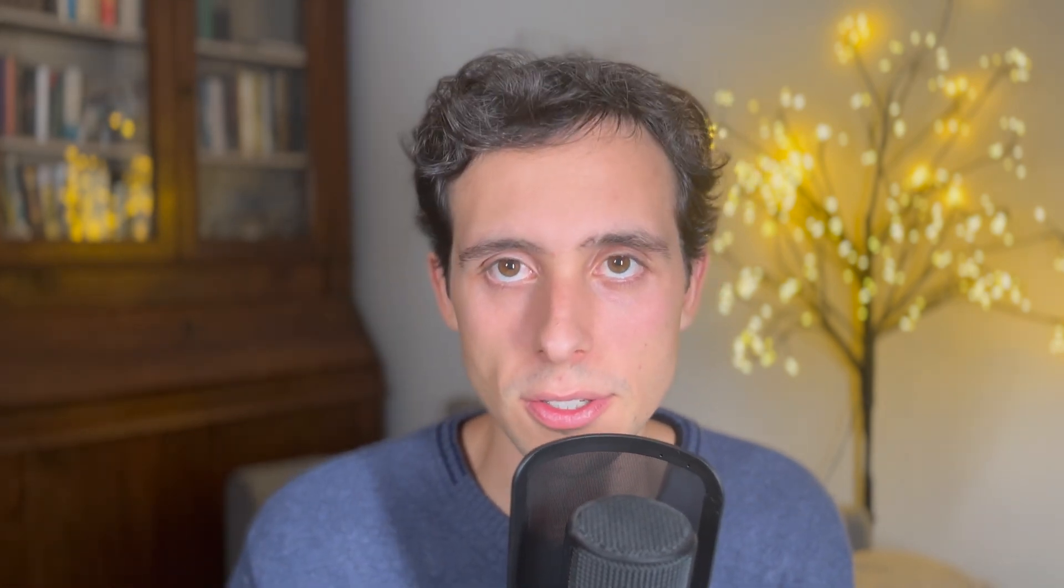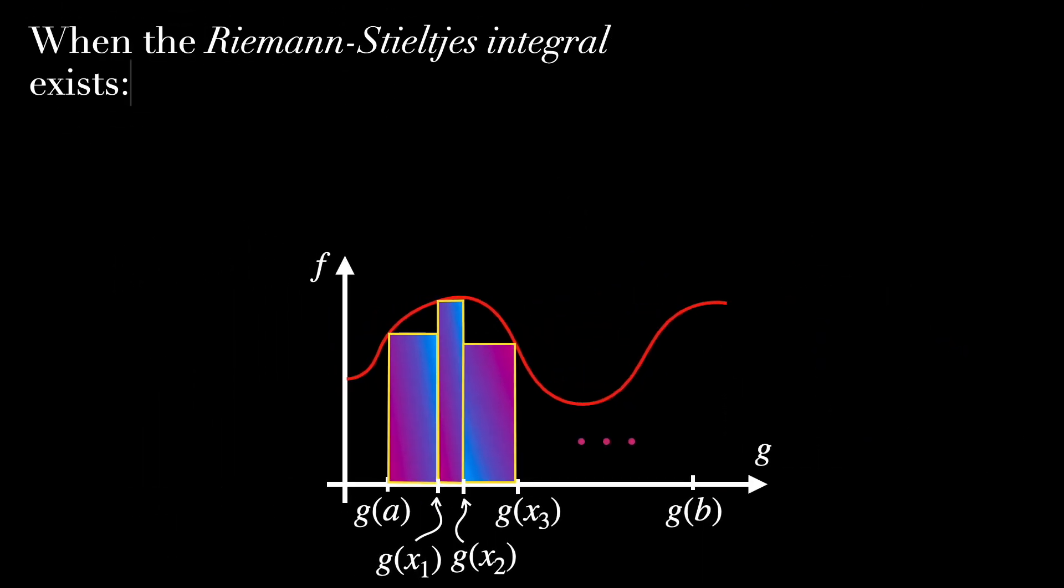Now, let's talk about when the Riemann-Stieltjes integral exists. The Riemann-Stieltjes integral exists if f is continuous, and g is of bounded variation on the interval [a,b].